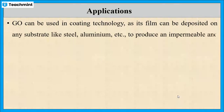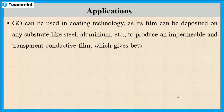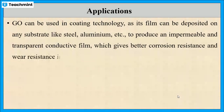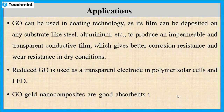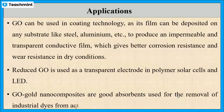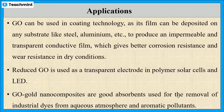Graphene oxide can also be used in coating technology to produce an impermeable and transparent conductive filter. Reduced graphene oxide is used as a transparent electrode in polymer solar cells and LEDs. Graphene oxide gold nanocomposites are used for the removal of industrial dyes from aqueous environments and aromatic pollutants. These are some of the applications of graphene oxide.